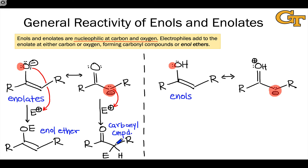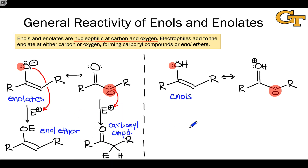In addition, reactions at the alpha carbon tend to be more favored thermodynamically because we have a stronger C=O double bond in the carbonyl compound product resulting from reactivity at the alpha position than the C=C double bond that appears when oxygen acts as a nucleophile. So even though O-attack might correspond to the best resonance form of an enolate, we often see reactivity at the alpha position. This is particularly true under equilibrium or thermodynamically controlled conditions, since the carbonyl compound product tends to be more stable than the enol ether.